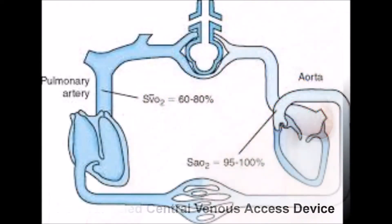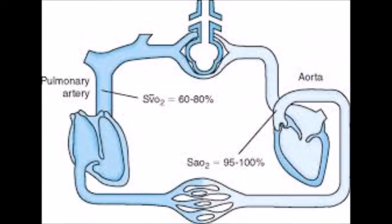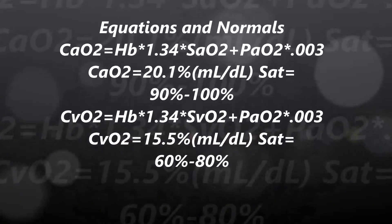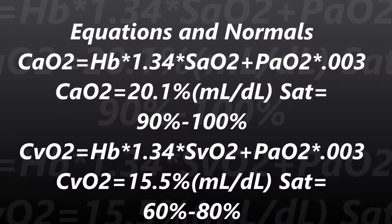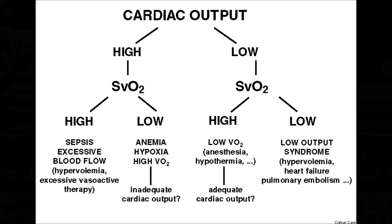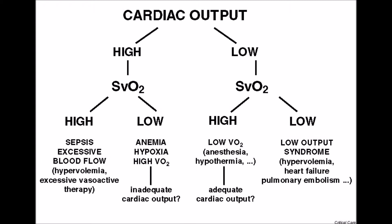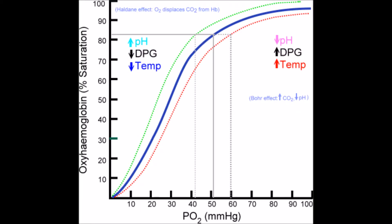So what does SVO2 tell us? SVO2 can be used to tell us the amount of oxygen we're extracting or using at the capillaries. Normal CaO2 is 20.1 volume percent at a saturation around 90 to 100, and your SVO2 is 15.5 volume percent with a saturation around 60 to 80. This means that venous circulation only uses 25% of the O2 sent to it. If more is being taken up, your venous circulation may be using too much; if it's higher, it may not be using enough.